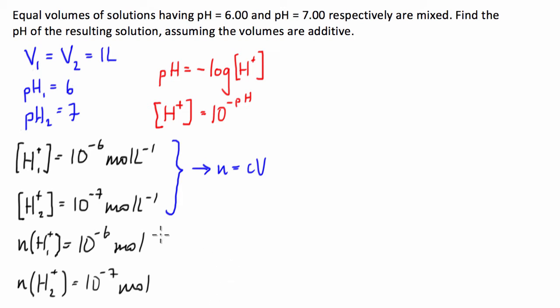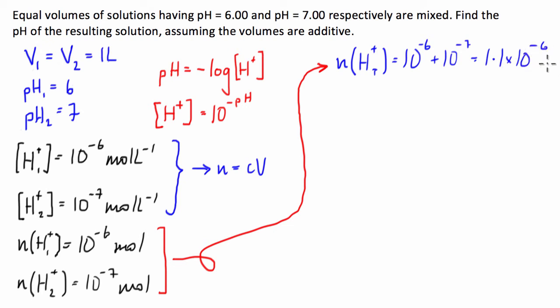Now we'll just take this up to the top here. So we've got that bit there. So what we're going to do now is we're going to add the two solutions together. So we're going to find the number of moles total is equal to 10 to the negative 6 plus 10 to the negative 7, and that's going to give us 1.1 times 10 to the negative 6 mole.